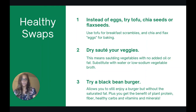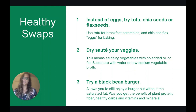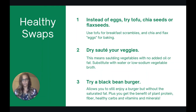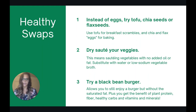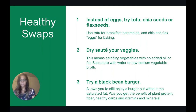Next, you can try dry sautéing your veggies, which means sautéing vegetables without added oil or fat. You can substitute with water or vegetable broth and sauté your veggies that way. The third swap is to try a black bean burger — this lets you still enjoy a burger but without the saturated fat that comes in a beef or chicken patty. Plus you get the benefit of plant protein, fiber, healthy carbs, vitamins, and minerals.